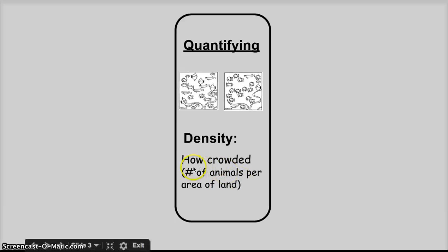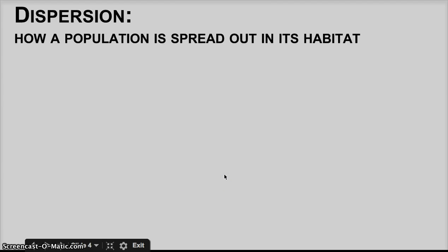And that can be simply the number of animals per specific area of land or number of producers per specific area of land.